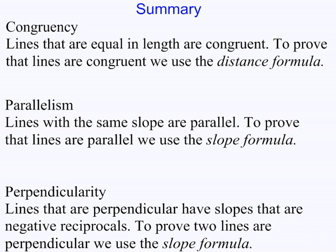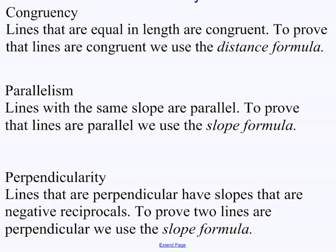Here's a quick summary. Congruency: lines that are equal in length are congruent; to prove that lines are congruent, we use the distance formula. Parallelism: lines with the same slope are parallel; to prove that lines are parallel, we use the slope formula. Perpendicularity: lines that are perpendicular have slopes that are negative reciprocals; to prove two lines are perpendicular, we use the slope formula.